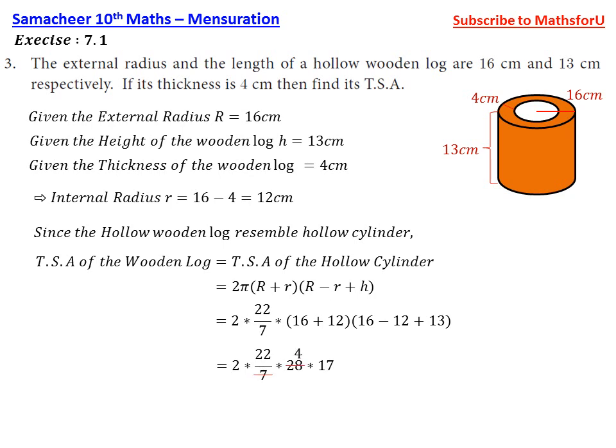So when we multiply 2 into 22 into 4 into 17, we get 2992. Therefore the TSA, total surface area of the wooden log, is 2992 square cm.